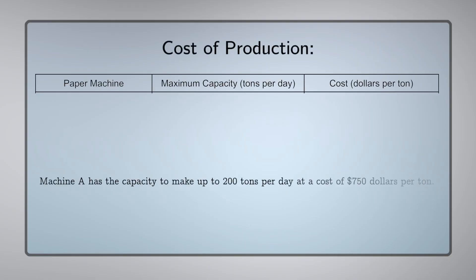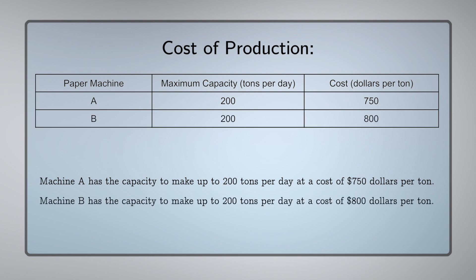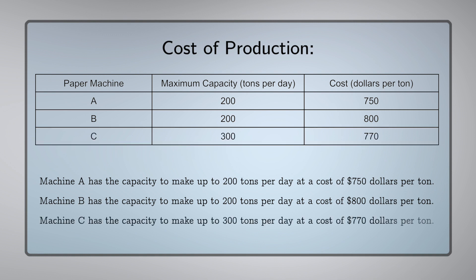So I assume you want to make this as inexpensively as possible, right? Of course. So let's talk about production. We have three paper machines that make toilet paper, and we can only use each one once since we have to make it very quickly, basically in one day. Machine A has the capacity to make up to 200 tons per day at a cost of $750 per ton. Machine B has the capacity to make up to 200 tons per day at a cost of $800 per ton. Machine C has the capacity to make up to 300 tons per day at a cost of $770 per ton. So it looks like we're going to have to figure out the correct combination of machines to make exactly 500 tons of paper at the lowest cost.